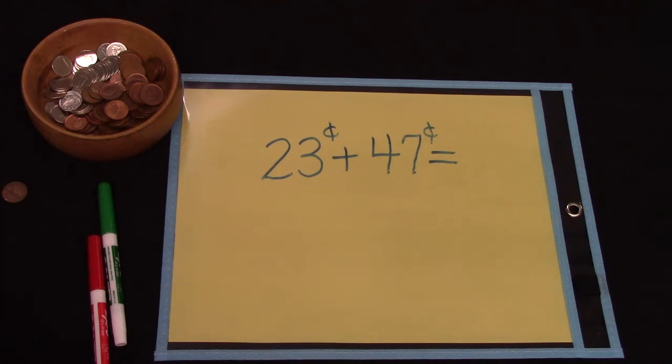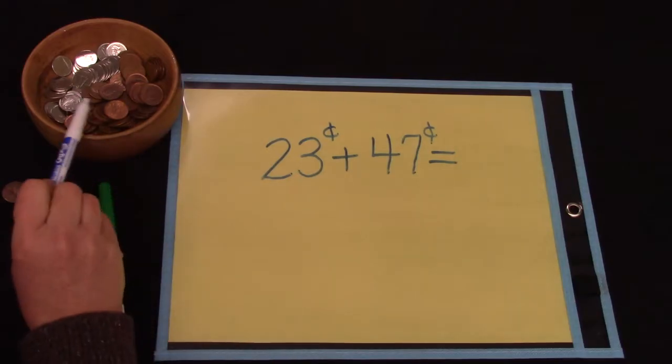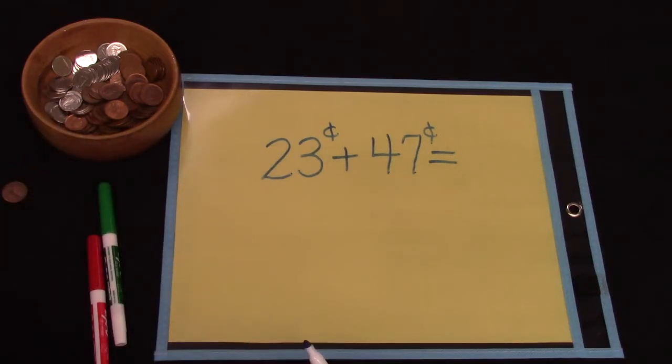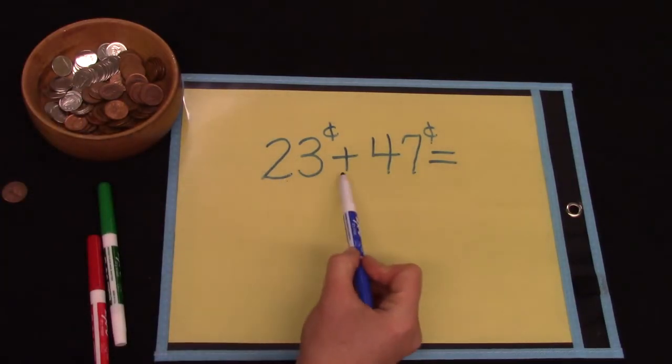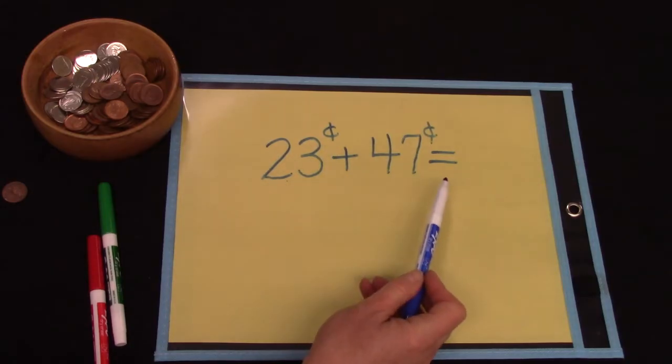Today we're going to learn how to add two-digit numbers and then we are going to use pennies and dimes to check our answers. We're going to take a look at this problem. It is 23 cents plus 47 cents.